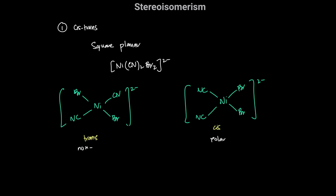If you were given a formula and told it exhibits stereoisomerism, you should be able to deduce it would be a square planar complex, because we know it's a four-coordinate complex, and for a four-coordinate complex to exhibit stereoisomerism it must be square planar. If it doesn't exhibit stereoisomerism, it would be tetrahedral geometry.